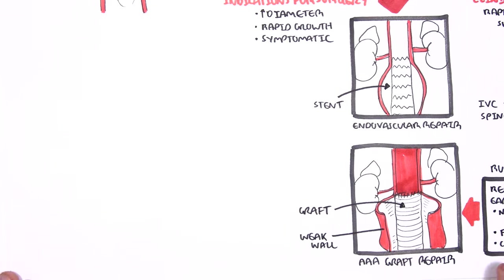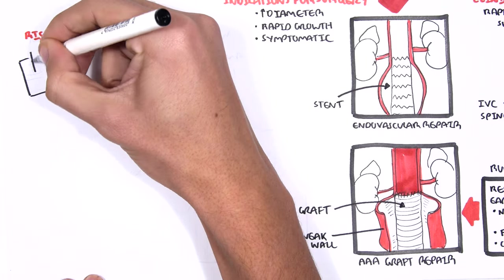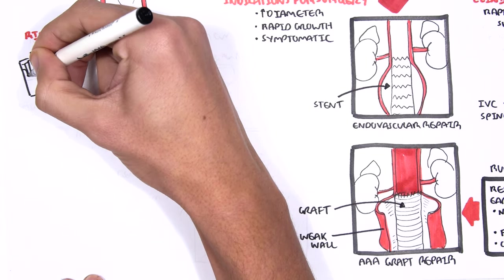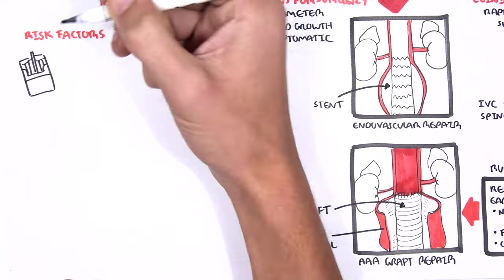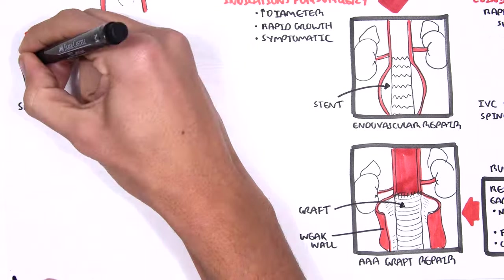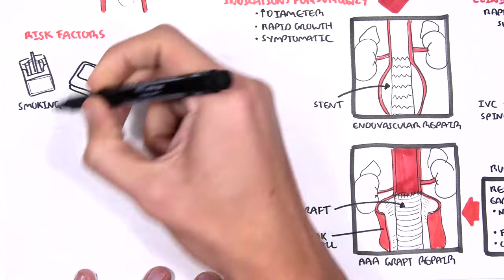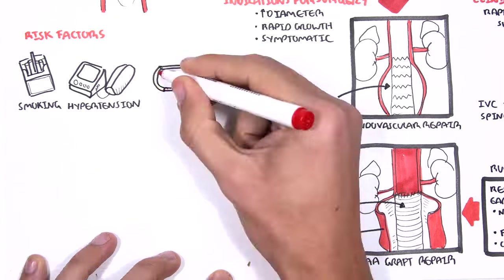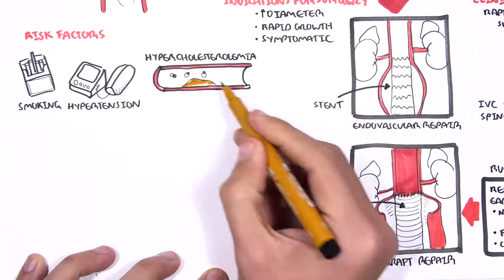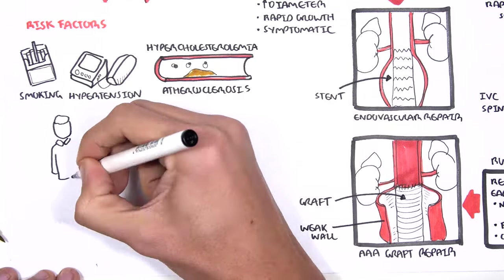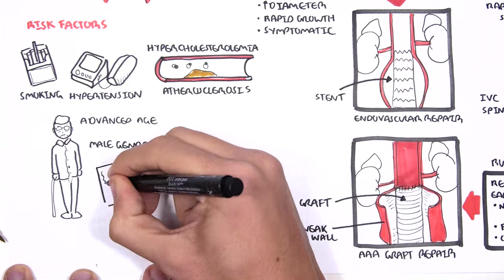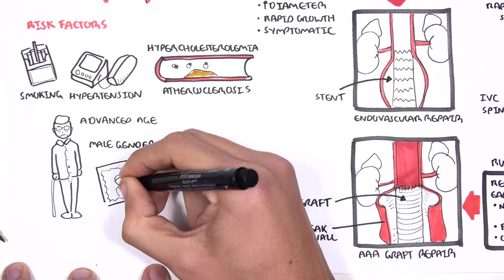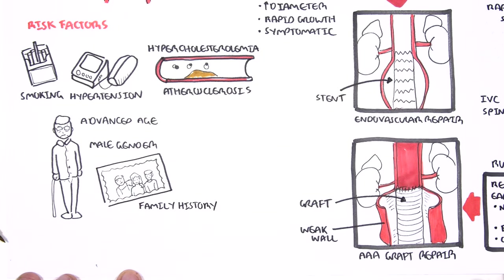The risk factors for developing a AAA are the same risk factors for cardiovascular disease and include smoking, hypertension, hypercholesterolemia, atherosclerosis, advanced age, male gender, and having a family history.